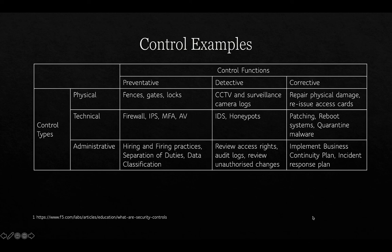From an administrative perspective, preventative controls include things like hiring and firing practices — doing due diligence when hiring someone, such as a police check — and organizing personnel through separation of duties, meaning no single person does too much that is critical to the organization. This limits the harm any one person can cause. Other preventative administrative controls include data classification. Detective administrative controls include access rights, audit logs, and reviewing unauthorized changes, while corrective controls include incident response plans and business continuity planning.